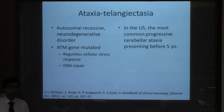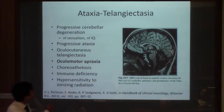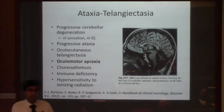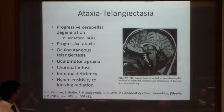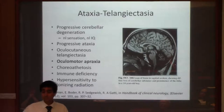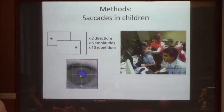It happens to be the most common progressive cerebellar ataxia presenting before age five in the US. There are maybe five or six hundred children with this disease in the United States. Hopkins is likely the primary center that sees them. On MRI you see progressive cerebellar degeneration — their cerebellums get small. They also have oculocutaneous telangiectasia, oculomotor apraxia which we'll discuss more, choreatic movements, immune problems, and radiation sensitivity.